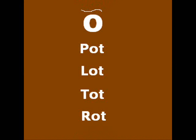This symbol is 'A' (as in pot) — it is not O and not AW, it is 'A', as in pot, lot, tot, and rot. Wherever you see this particular symbol, the pronunciation would be 'A'.